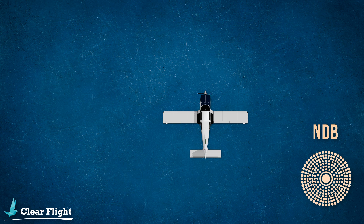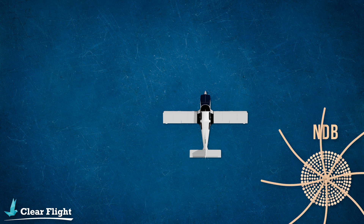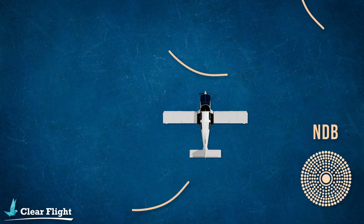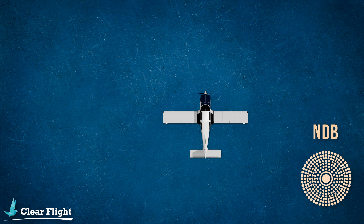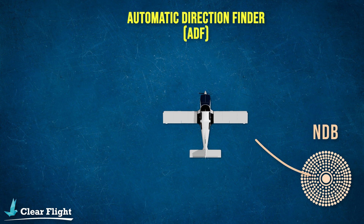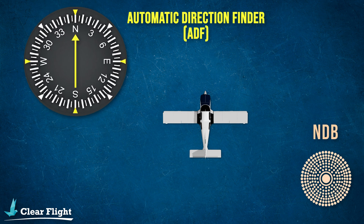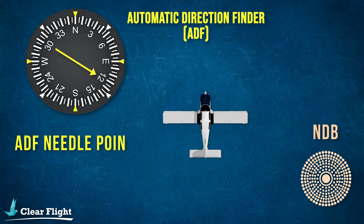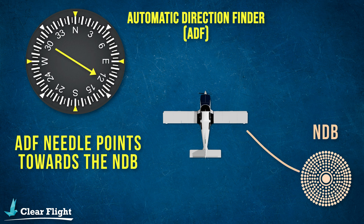Before we dive into the G1000, it's crucial to understand what an NDB is. The non-directional beacon is a ground-based radio transmitter that sends out a continuous signal in all directions. Pilots can then use their automatic direction finding equipment, or ADF, to display their bearing to or from the station.